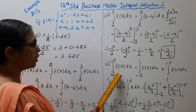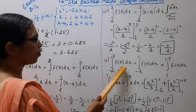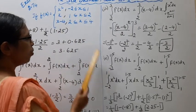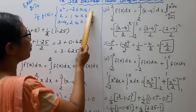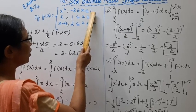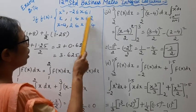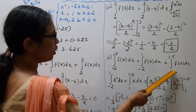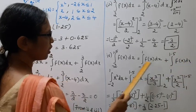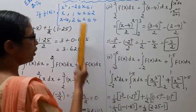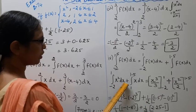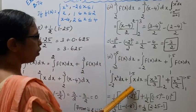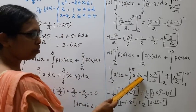Fourth subdivision: integration from minus 2 to 1.5 of f of x dx. Since 1.5 falls between 1 and 2, we split the integral: from minus 2 to 1 we use x squared, and from 1 to 1.5 we use x. So this becomes the integral from minus 2 to 1 of x squared dx plus the integral from 1 to 1.5 of x dx.